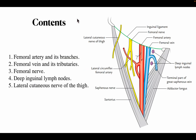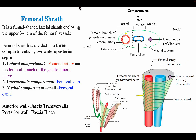The contents of the femoral triangle include the femoral artery and its branches — three superficial branches and three deep branches. The femoral vein and its tributaries, the femoral nerve, deep inguinal lymph nodes, and the lateral cutaneous nerve of the thigh are also present in the femoral triangle.